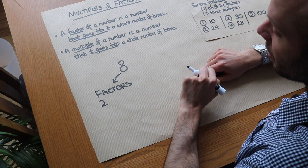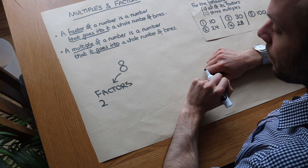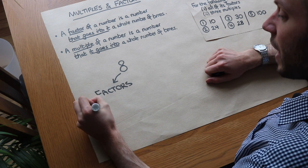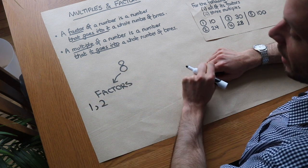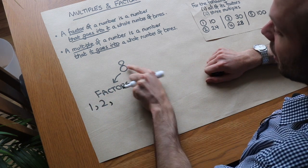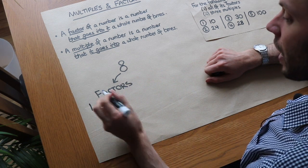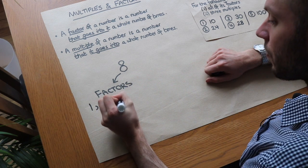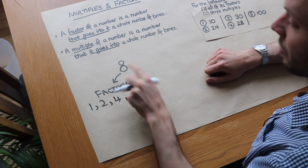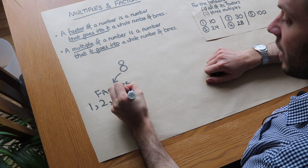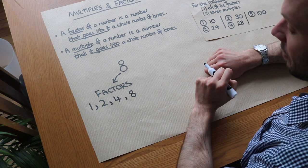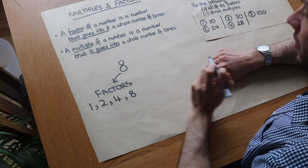We can divide 8 by 2 and it gives us the whole number 4. What other factors of 8 do we have? Well, 1 goes into 8 — we could divide 8 by 1 and it goes in a whole number of times, 8 times. We can also divide 8 by 4, because 8 divided by 4 is 2. And we could divide it by itself: 8 divided by 8 is 1. Those are all the factors of 8.